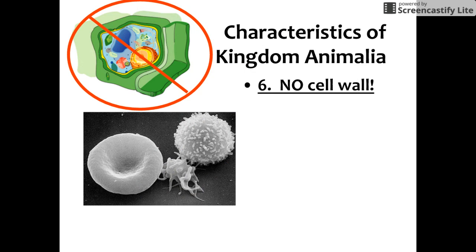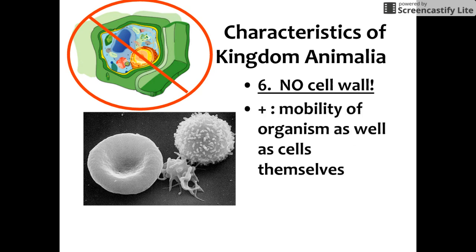Our sixth characteristic is that animal cells do not have a cell wall. Plant cells don't have any internal support system like a skeleton, so they need a cell wall around every single cell to help them stand upright — but animals do not. This increases the mobility of the organism as well as the cells themselves; they're not rigid or fixed to one place. Even within the animal's body, cells are pliable — red blood cells can squeeze through the smallest capillaries one at a time, which contributes to mobility.